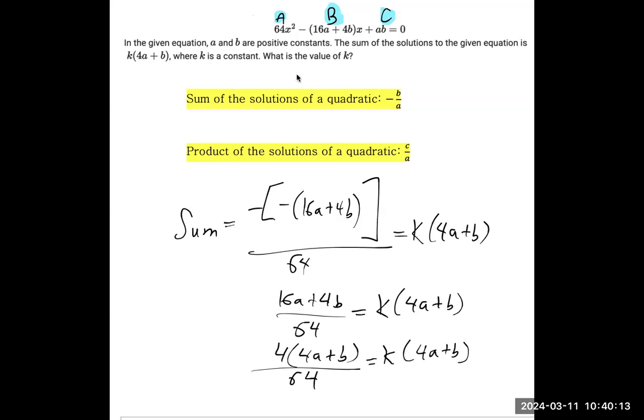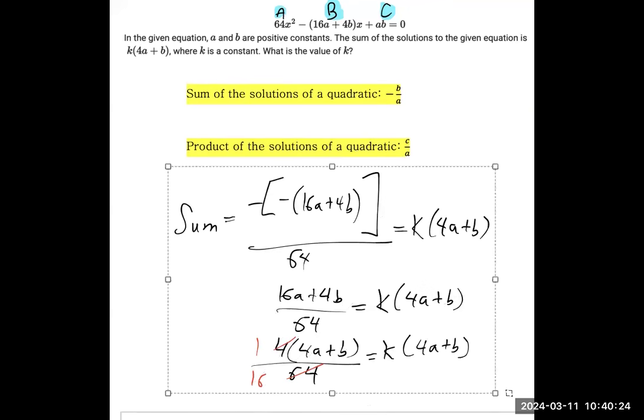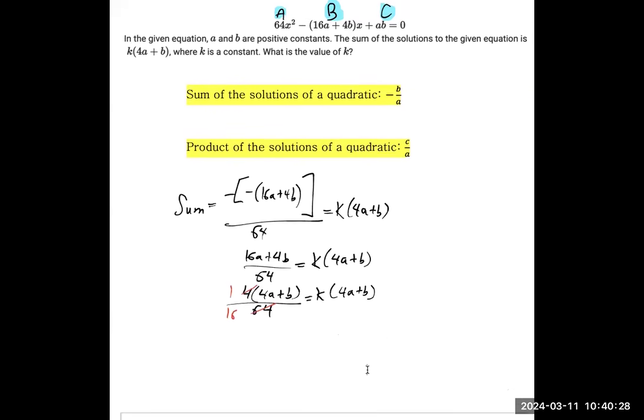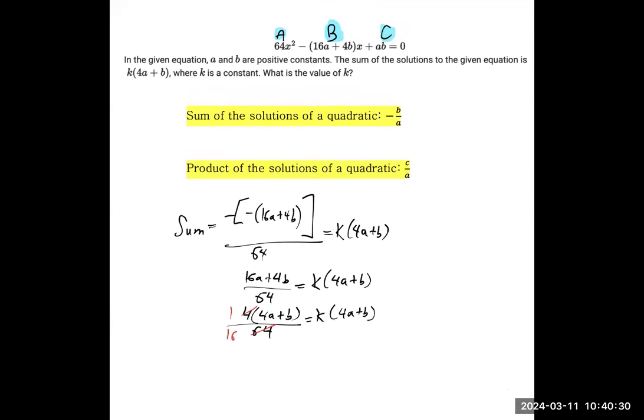So the 4 and the 64 can simplify. Those can be divided by 4, leaving you with 1 and 16. Right now, we've got 1 over 16 times 4A plus B equals K times 4A plus B, and therefore K is equal to 1 over 16.